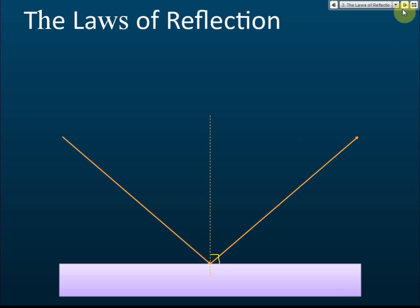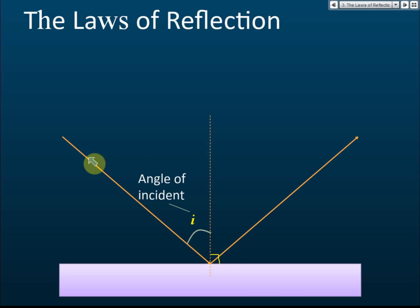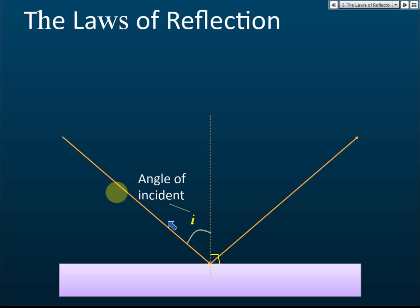This light ray that hits the point of reflection is called the incident ray. The angle between the incident ray and the normal is called the angle of incidence. All angles must always be measured from the normal. Some students may measure from the mirror surface instead — that is not correct. All angles must be measured from the normal.